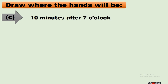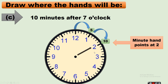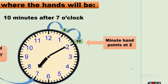Next: 10 minutes after 7 o'clock. We point the minute hand to 10 minutes: from 12 to 1 is 5 minutes, and 1 to 2 is another 5 minutes — so 10 minutes total. That is why our minute hand points at 2, and our hour hand points at 7.